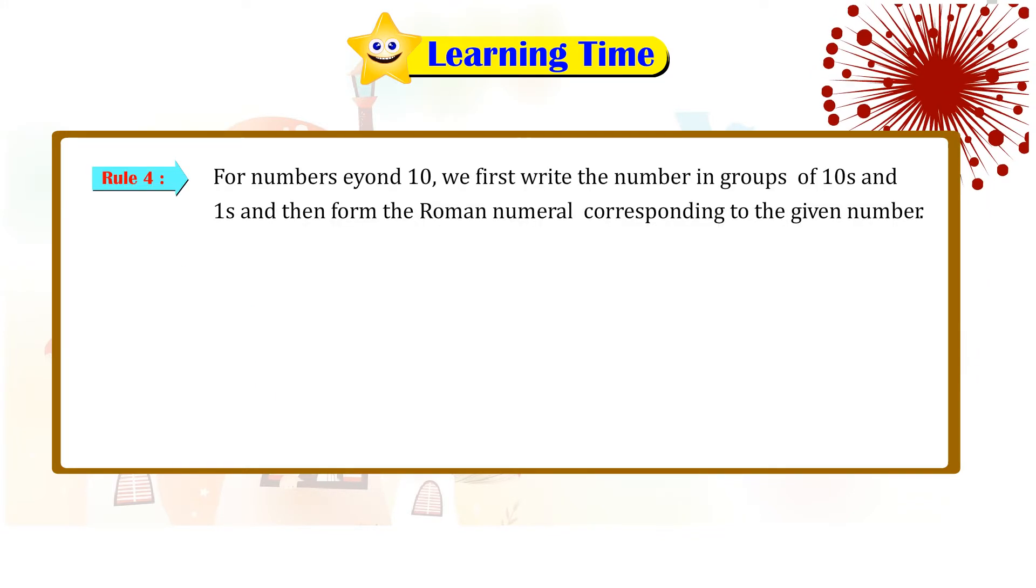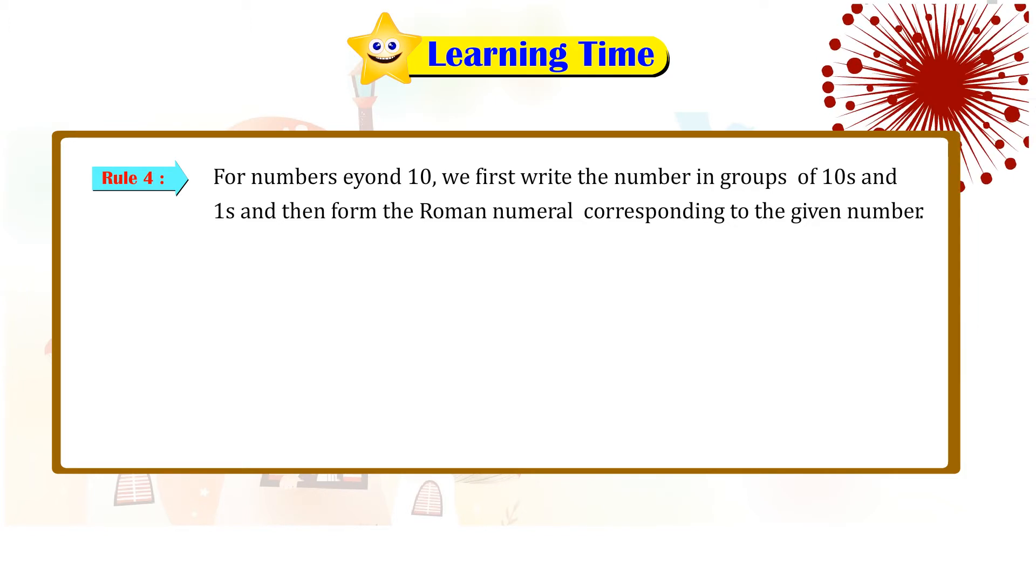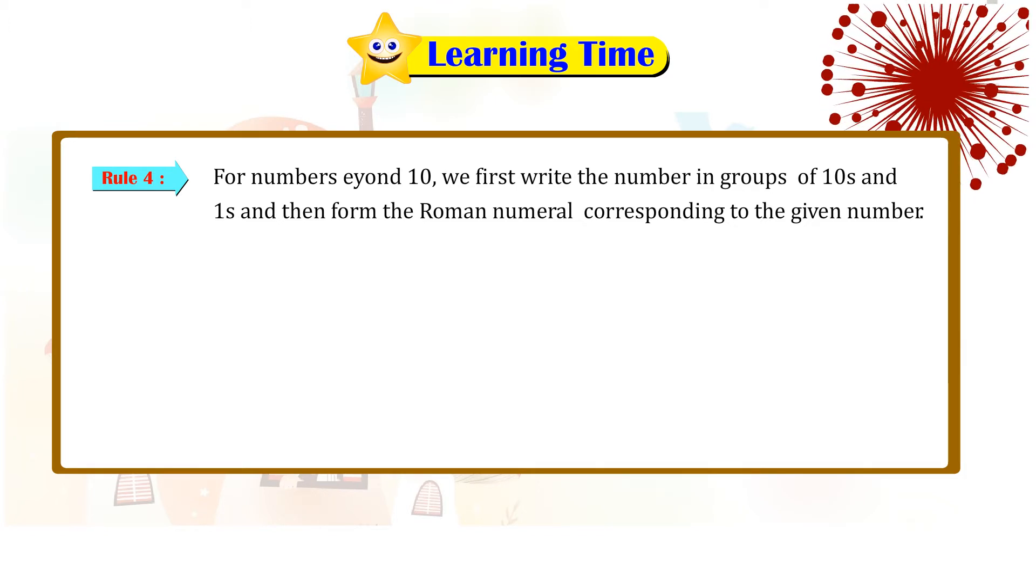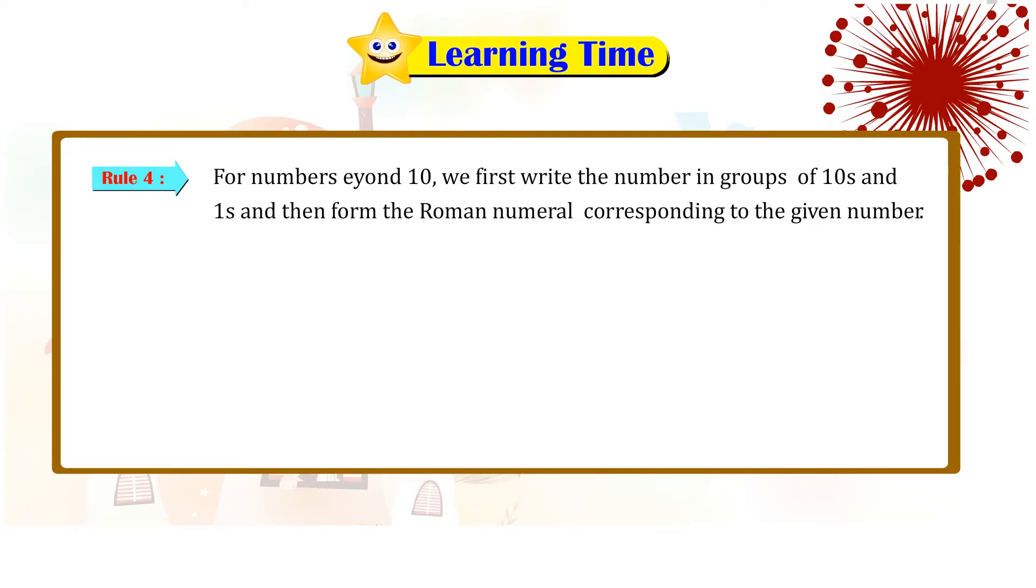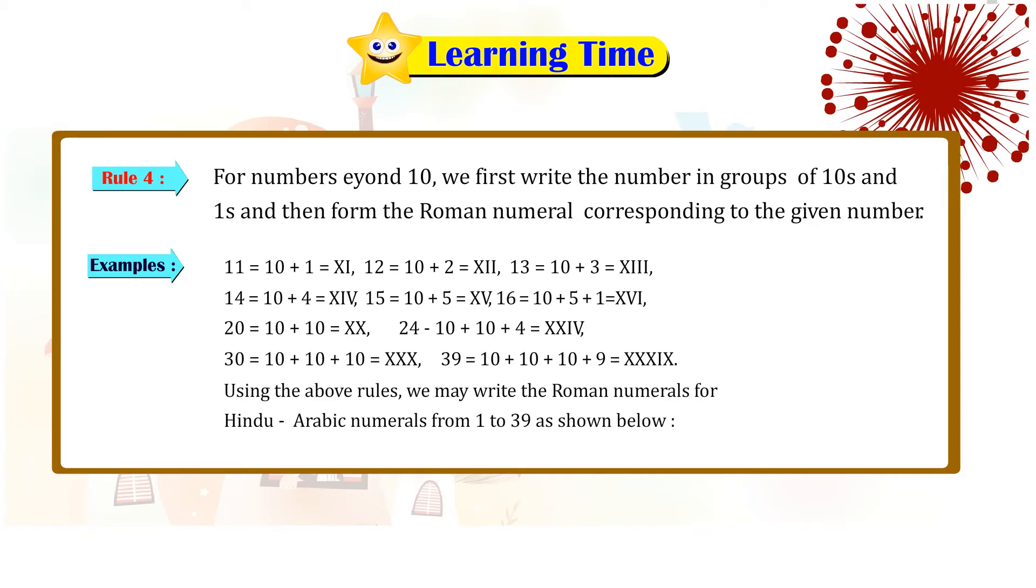Rule four: For numbers beyond ten, we first write the number in groups of tens and ones and then form the Roman numeral corresponding to the given number. Please find the below examples.